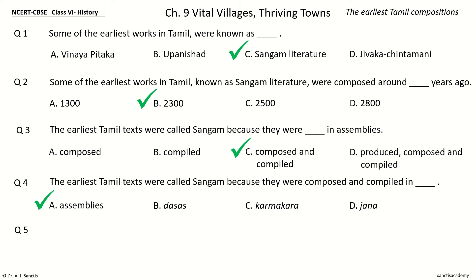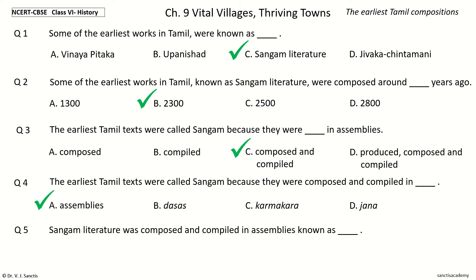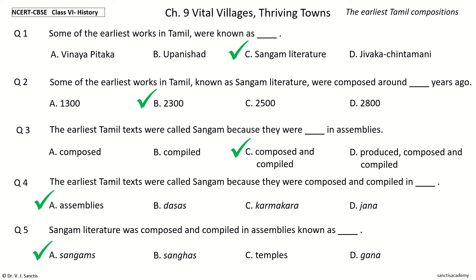Question 5. Sangam literature was composed and compiled in assemblies known as blank. The options are: Sangams, Temples, Gana. The answer is Sangams. Sangam literature was composed and compiled in assemblies known as Sangams.